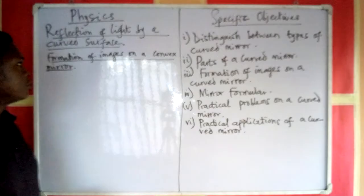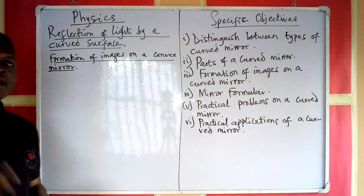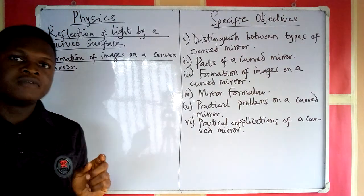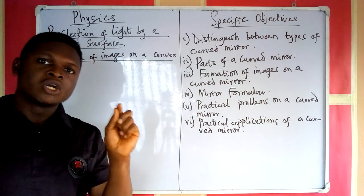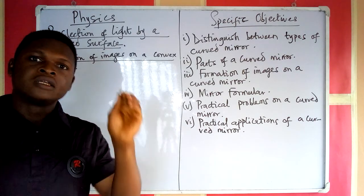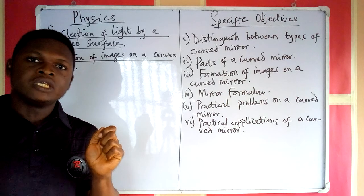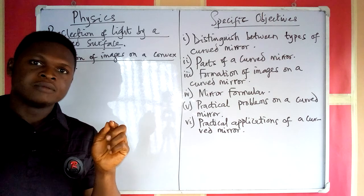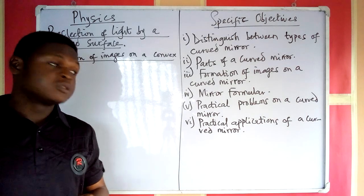Going back to what we have been about: formation of images on a convex mirror. Now, talking about the nature, size, and position of the image formed by a convex mirror, the properties of the image remain constant, irrespective of where the position of the object is in front of the mirror. We are going to first talk about the rules of the ray diagrams used in forming images on a convex mirror. The rules are as follows.